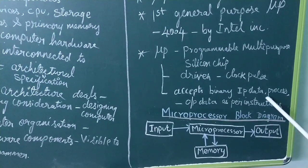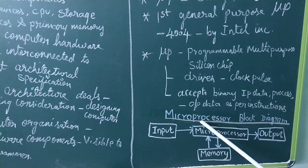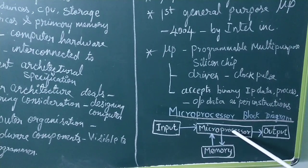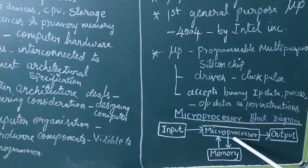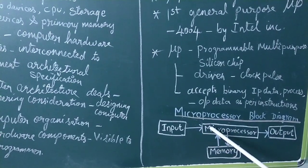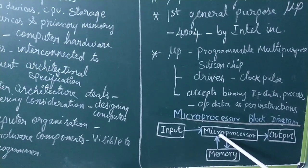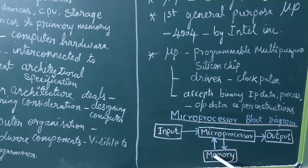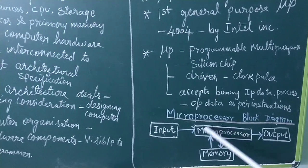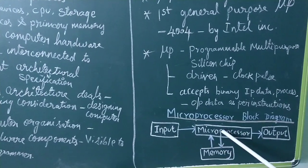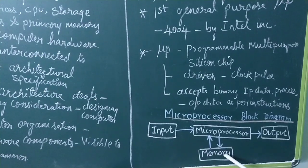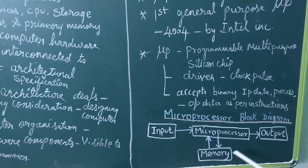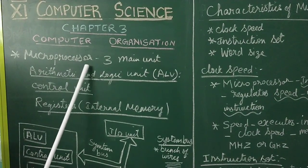This is the block diagram of a microprocessor. The input goes to the microprocessor which contains the control unit. The microprocessor is the CPU, as learned in the first lesson. The control unit manages memory — calculations are added to memory and stored. The output is then produced from the microprocessor.